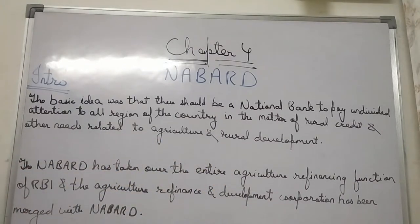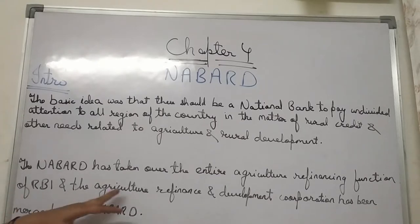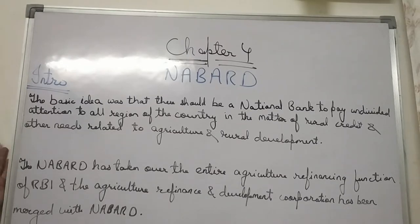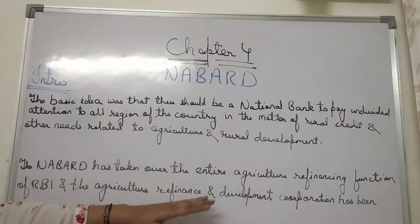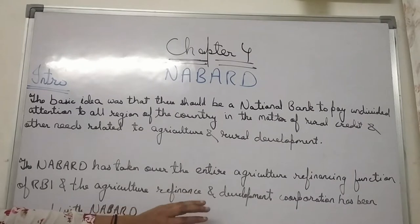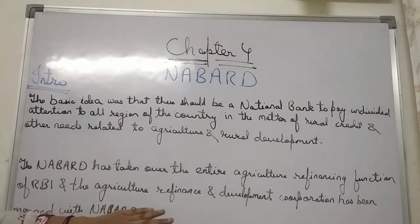NABARD has taken over the entire agriculture refinance function previously held by the RBI. The Agriculture Refinance and Development Corporation was merged with NABARD, as it was considered a weak institution. NABARD, as a strong bank, absorbed these functions. The committee was formed in 1979, and the bank was established in 1982.